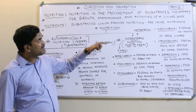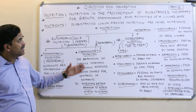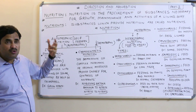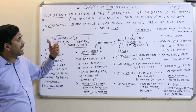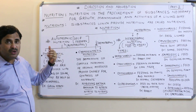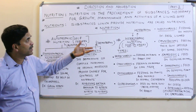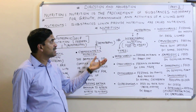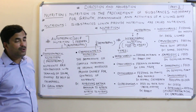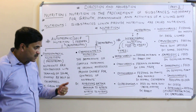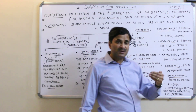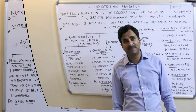So this was part two of the digestive system, in which we discussed nutrition and nutrients, and the various modes of nutrition — autotrophic and heterotrophic — along with their various subtypes. In upcoming videos we will continue with this topic, so keep watching. Thanks a lot.